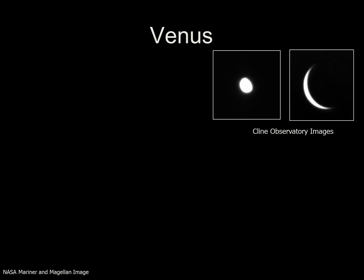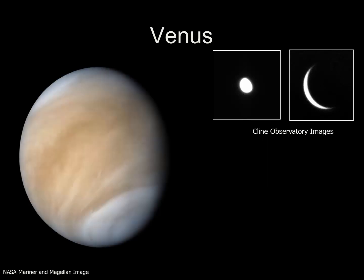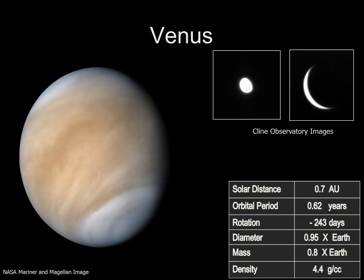There's no way you can explain the changing shape and size if Venus goes around the Earth. We have visited Venus with a spacecraft. Here's an image taken by the NASA Mariner spacecraft. Venus orbits the Sun at a distance of 0.7 astronomical units. Its orbital period is 0.62 years, or 224 days. With a rotation period of negative 243 days, its backwards rotation is longer than its orbital period. Due to this extremely slow rotation, Venus is the most spherical of all the planets. Venus has a diameter that's 95% that of the Earth, and a mass of 80% of the Earth, giving it a density of 4.4. You can easily see why Venus is often referred to as Earth's twin.